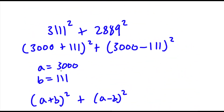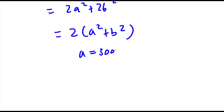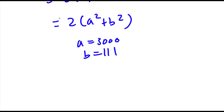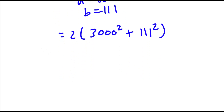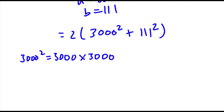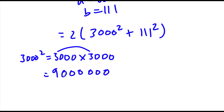Remember we set A equal to 3,000 and B equal to 111. So substituting back, I get 2 times 3,000 squared plus 111 squared. Now 3,000 squared is 3,000 times 3,000 — we can ignore the zeros and do 3 times 3 to get 9, then add 6 zeros, giving us 9,000,000. So now I have 2 times 9,000,000 plus 111 squared.